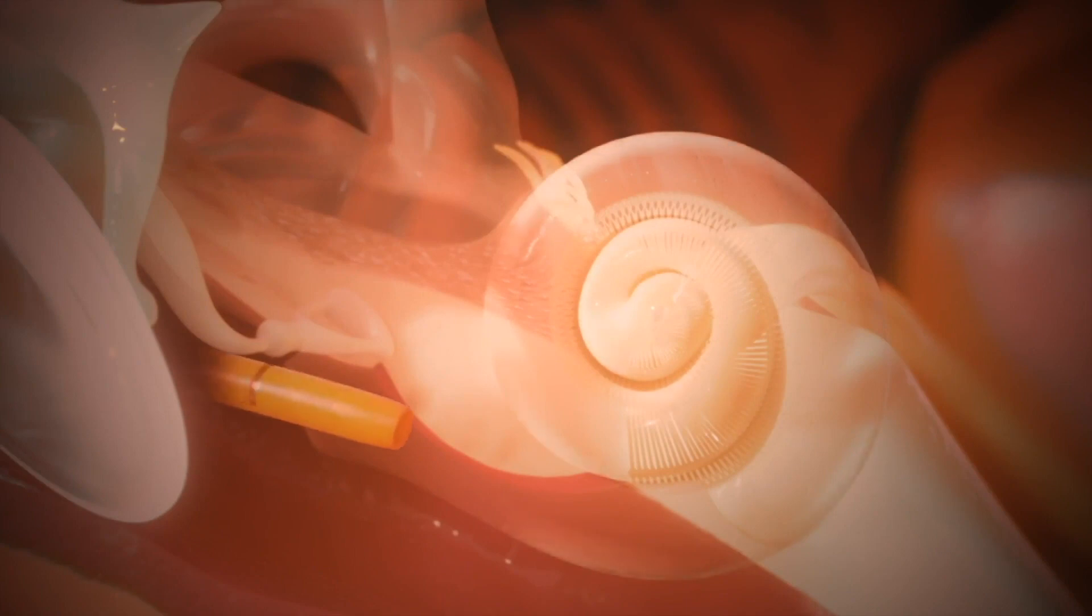A cochlear implant has an electrode that bypasses damaged or missing sensory hair cells, delivering electrical signals to the hearing nerve and mimicking the function of a healthy inner ear.